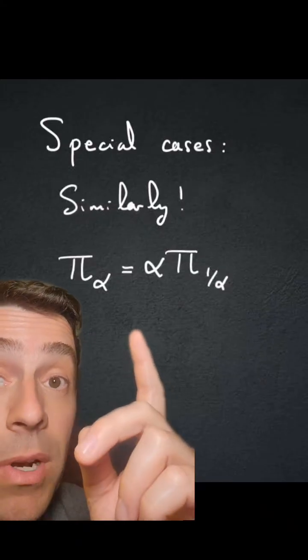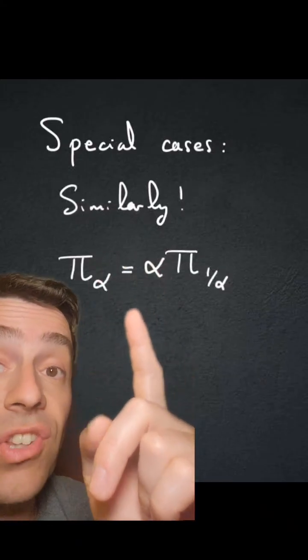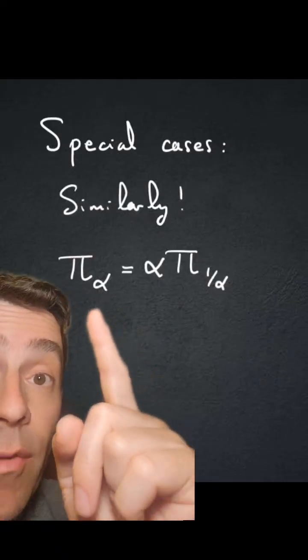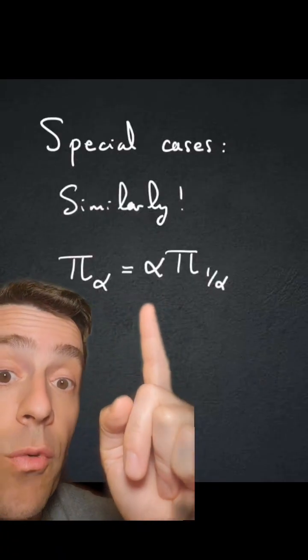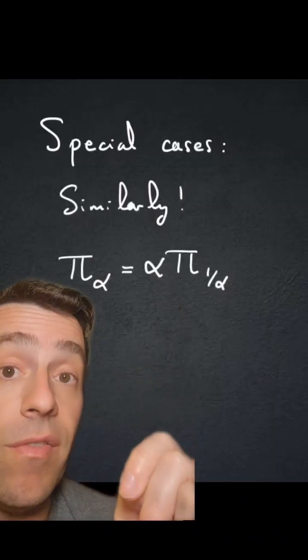And in fact, similarly, for any alpha, for any positive real number alpha, pi of alpha will be equal to alpha times pi of 1 over alpha.